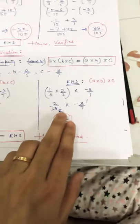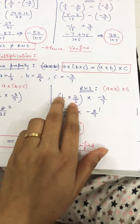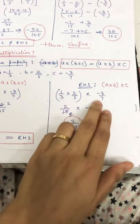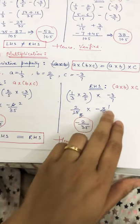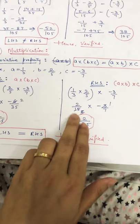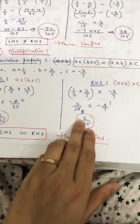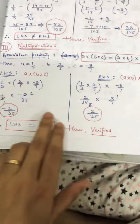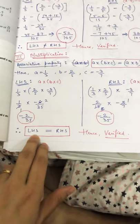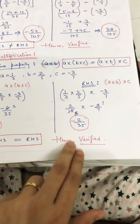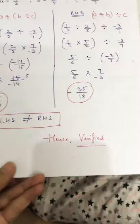Here 2 upon 15 will be here after solving this bracket, and it is minus 3 by 7 as it is. Now I'll cancel: 3 by 15 gives 5, 2 and 1 gives 2, and minus sign will be as it is, and 5 times 7 gives 35. Now see — both answers are the same, so left hand side is equal to right hand side, and hence verified.